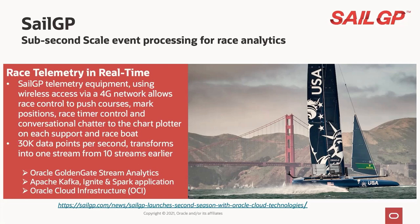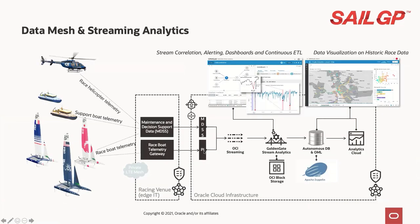Oracle Stream Analytics makes autonomous decisions based on 30,000 data points from an F50 catamaran, which sends data every second. In the past they were running 10 separate streams; with Oracle Stream Analytics they consolidated to a single stream. Their deployment architecture has data coming from Race Helicopter Telemetry, Support Boat Telemetry, and Race Boat Telemetry. All of it goes through the Racing Venue Edge IT, processing that first-stage data and sending it into OCI Cloud through OCI Streaming and GoldenGate Stream Analytics. They are also planning to adopt Autonomous DB and OML with notebooks before publishing the application to other targets.